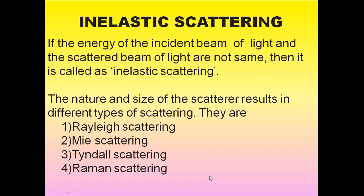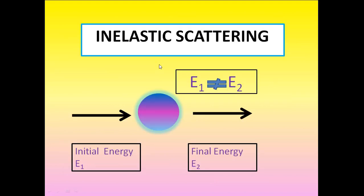The reverse is the case in inelastic scattering. In inelastic scattering, if you calculate the energy E1 and energy E2, they won't be the same. There is some difference in the energy E1 and E2. The incident ray possesses the initial energy E1, and if you calculate the energy of the scattered ray, it is E2. Combining these two, E1 is not equal to E2, and this type of scattering is called inelastic scattering.